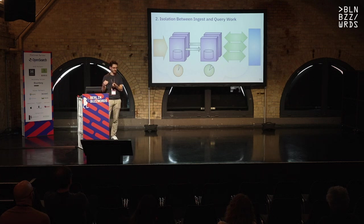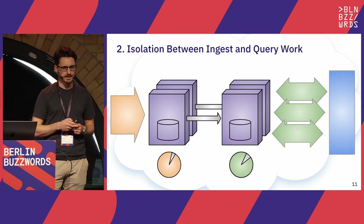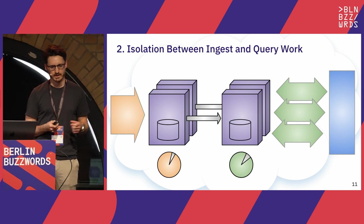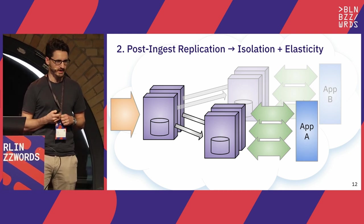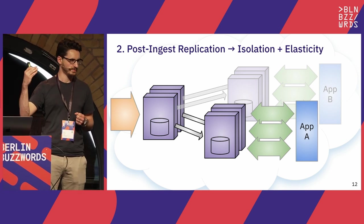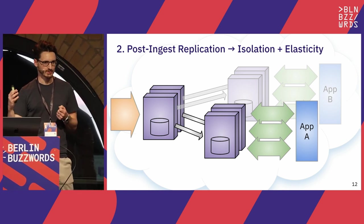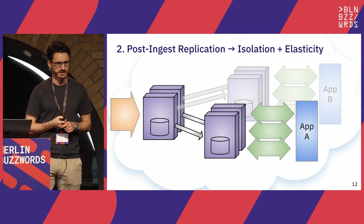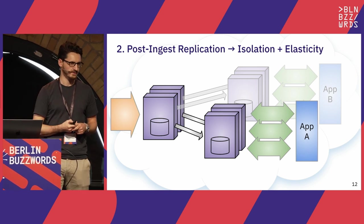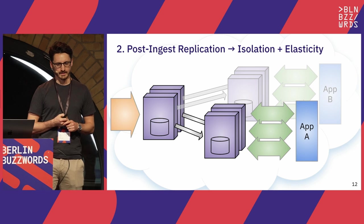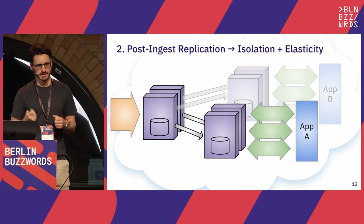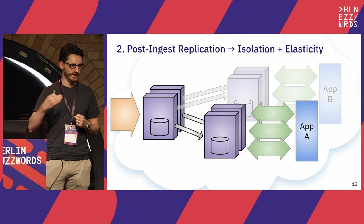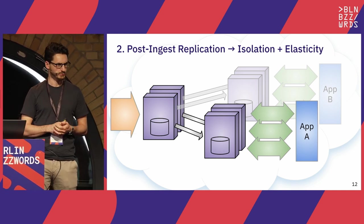Now that we have isolation between ingest and query, we can have multiple query virtual instances. If you have two applications, we don't want a spike in load for one to affect the other or affect ingest. If an application does suffer a spike, we want auto-scaling. If application A becomes popular, your database needs to grow — more machines or bigger machines. But the problem is that every virtual instance we allocate also needs to pay for a copy of storage, which is expensive. And if you need to auto-scale, loading storage onto a new machine takes tens of minutes.